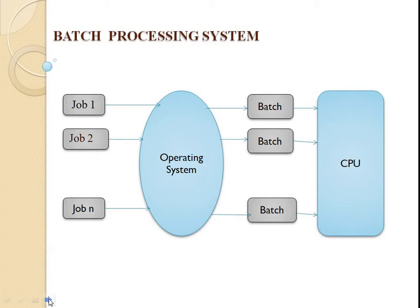The OS keeps a number of jobs in memory and executes them without any manual intervention. Jobs are processed in order of submission, that is in first-come, first-served order. When a job completes its execution, its memory is released and the output for the job gets copied into the output spool for later printing or processing.